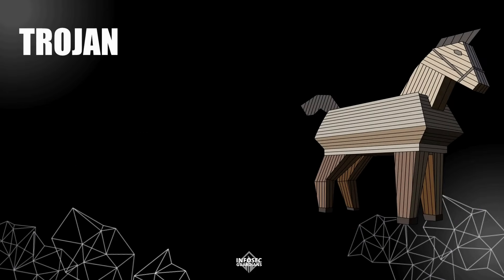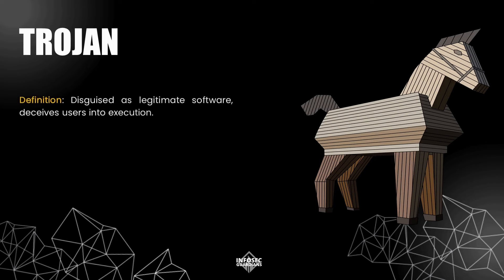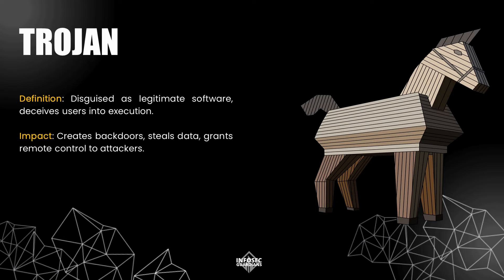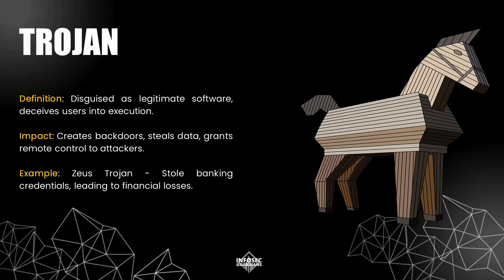Moving on to Trojans, also known as Trojan horses. Trojans disguise themselves as legitimate software to trick users into installing them. Once a Trojan is executed, it can perform a variety of malicious actions, like creating backdoors, stealing data, or even giving remote control of the system to attackers. Trojans don't replicate like viruses or worms, but their deceptive nature makes them highly effective. A famous example is the Zeus Trojan, which was used to steal banking credentials, leading to substantial financial losses worldwide.